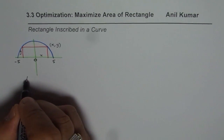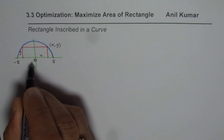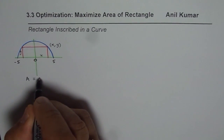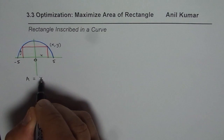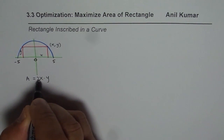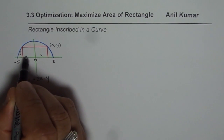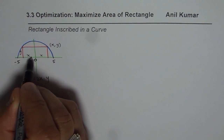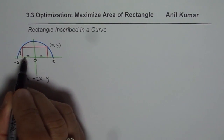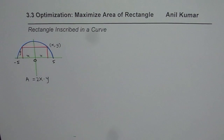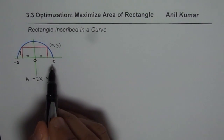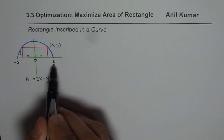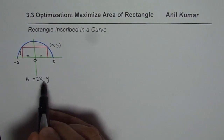Therefore, we can write the area of this rectangle as 2xy. Since the total width will be x plus x, which is 2x. So the area of this rectangle inscribed in a semicircle of radius 5 units is 2xy.